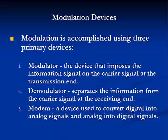The device that imposes the information signal on the carrier signal at the transmission end is known as a modulator. The demodulator device separates the information from the carrier signal at the receiving end. A modem is a device used to convert digital into analog signals and analog into digital signals. Note that the word modem derives from 'mod' in modulation and 'dem' in demodulation. With that as a definition and brief overview of the signal processing technique called modulation, let's look at the four basic types of modulation.